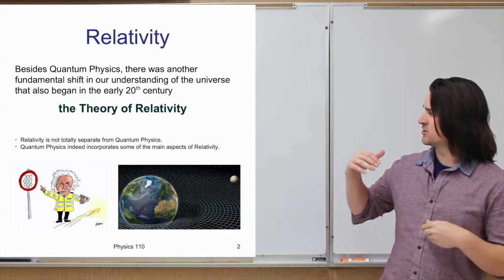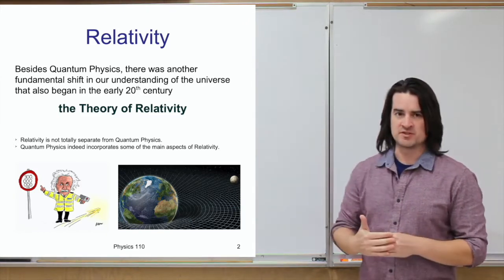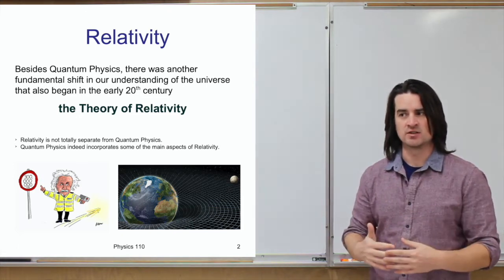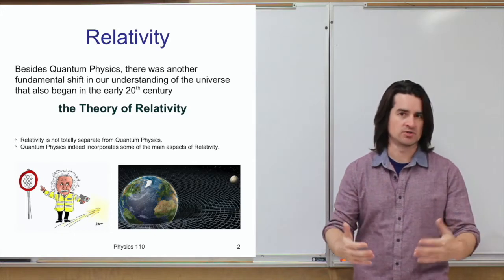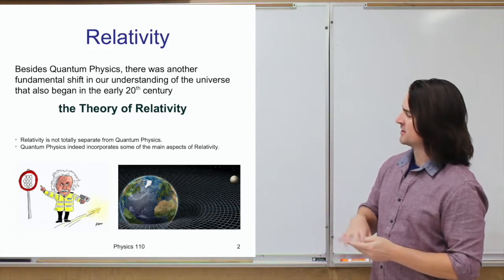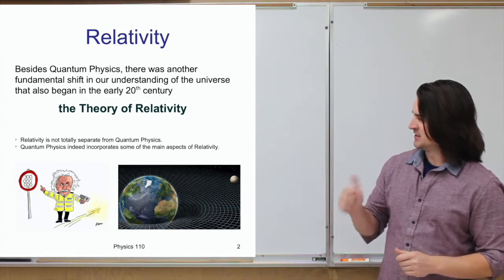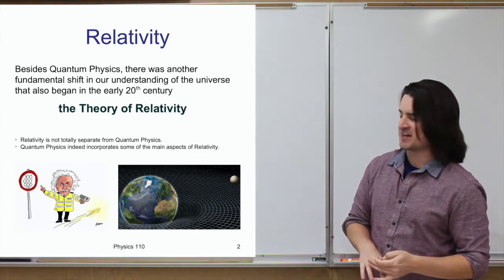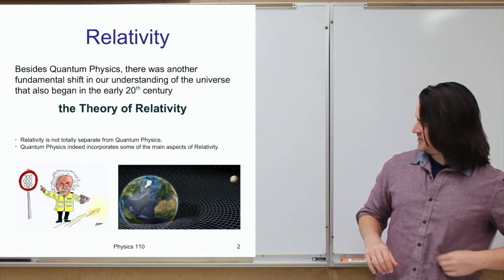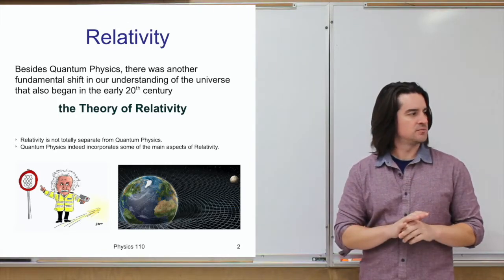The theory of relativity is not necessarily separate from quantum physics. In fact, modern quantum physics incorporates a good bit of the stuff from relativity to actually enhance and get more accurate results. There's a cartoon here of a very famous physicist showing light being tagged for trying to go past the speed limit. Another picture is a visualization of what you might call spacetime, and we're going to talk about that a little bit this lecture, but more in the next lecture.